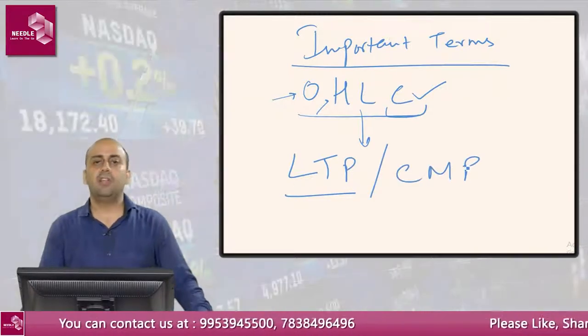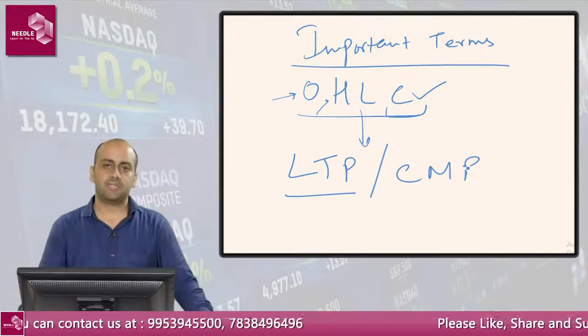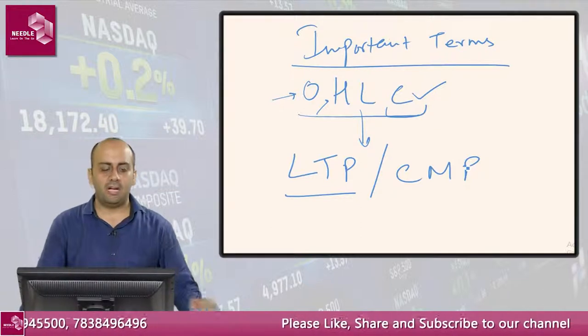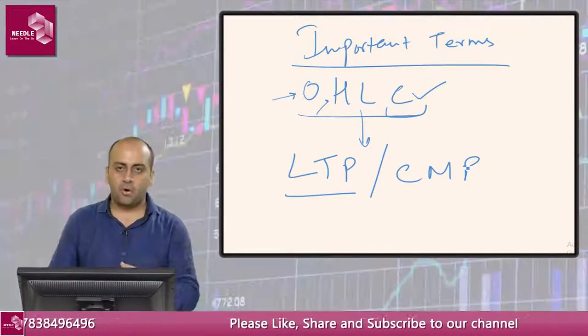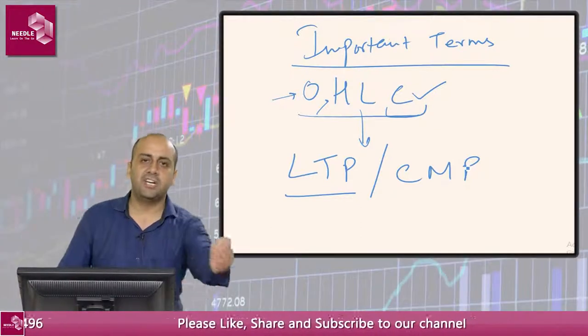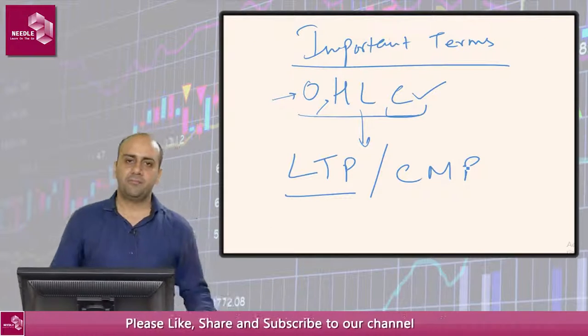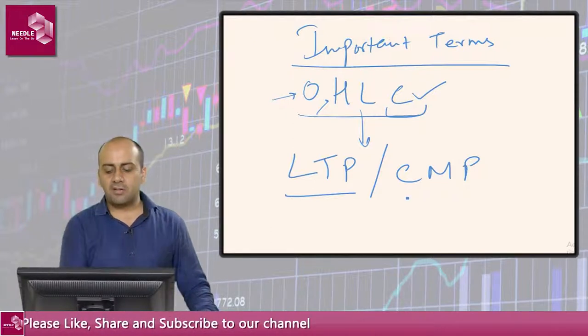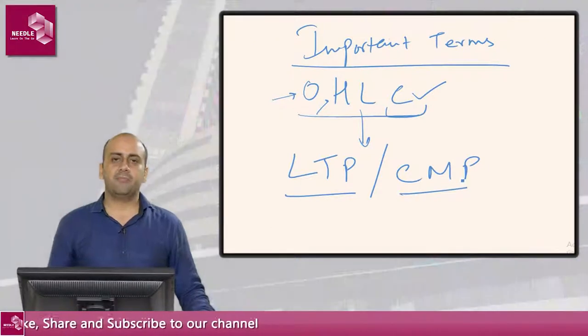This is the last traded price — LTP is the price at which the stock was most recently traded. And CMP stands for current market price.